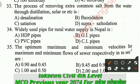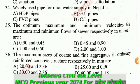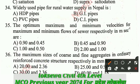Question number 33: The process of removing extra common salt from water through distillation, solar evaporation, or similar methods is: A - desalination, B - fluoridation, C - satiation, D - super saltodation. The correct answer is A: desalination - the process of removing extra salt from water.